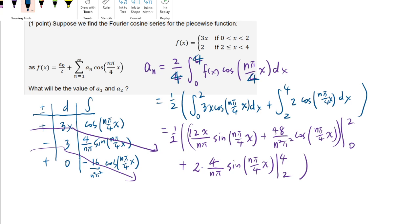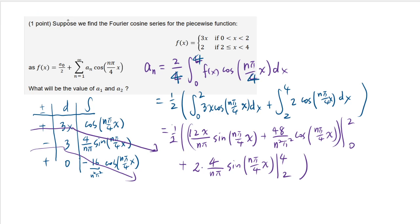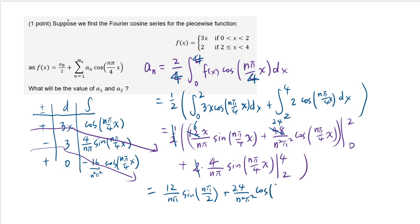Before moving on, let's absorb the one-half factor: 12 divided by 2 is 6, 48 divided by 2 is 24, and the 2 and one-half cancel for the second integral. Now plugging in the upper limit of 2: 2 times 6 over n pi gives 12 over n pi · sine(n pi over 4 · 2), and since 2 over 4 simplifies to one-half, this is just sine(n pi over 2). Plugging 2 into the cosine term gives 24 over n squared pi squared · cosine(n pi over 2).